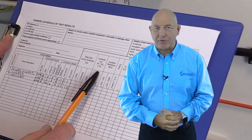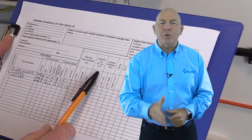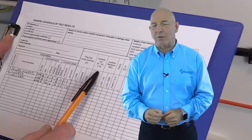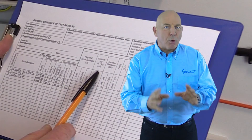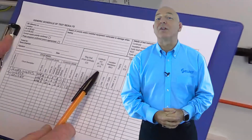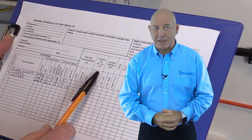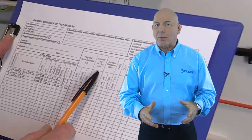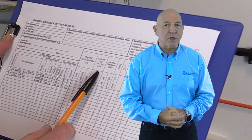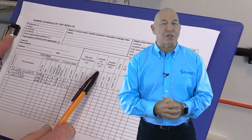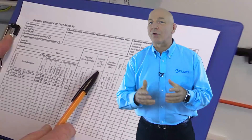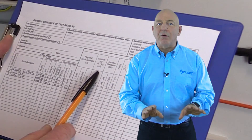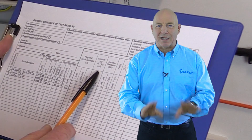After completion of each test, the measurement should be recorded in the relevant column of the schedule of test results. A model schedule of test results is given in Appendix 6 of BS 7671. The inspector will then need to use his or her knowledge to compare the results obtained against certain criteria given in BS 7671 to verify that the outcome is satisfactory.